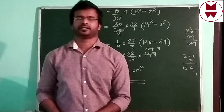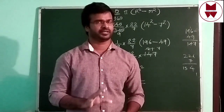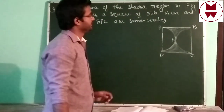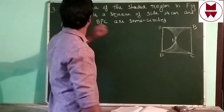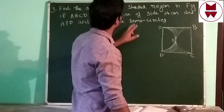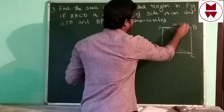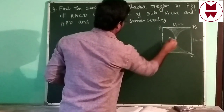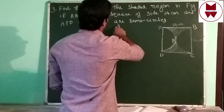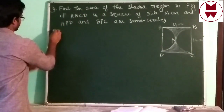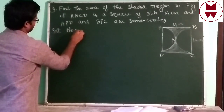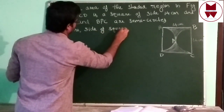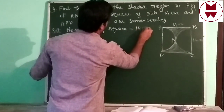That is our area of shaded region. Using only one formula — area of sector = (θ/360) × π × r² — we can do this problem very easily. Now Question 3: Find the area of the shaded region in the figure, where ABCD is a square of side 14 cm, and APD and BPC are semicircles. Side of square is already given as 14 cm.